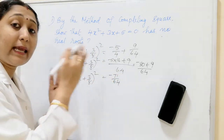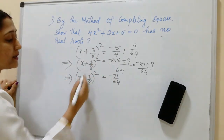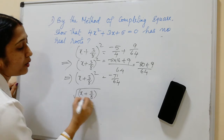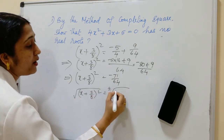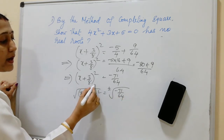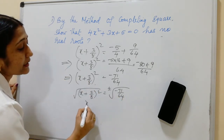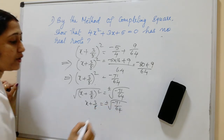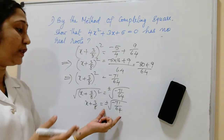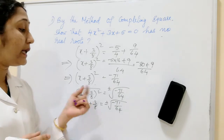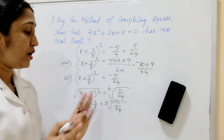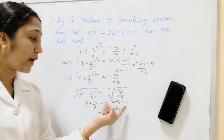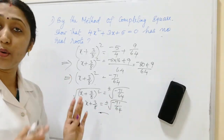The next step is to take the square root of both sides: √[(x + 3/8)²] = √(−71/64), so x + 3/8 = ± √(−71/64). We know that the square root of a negative value is not real. Therefore the equation has no real roots. This proves that 4x² + 3x + 5 = 0 has no real roots.